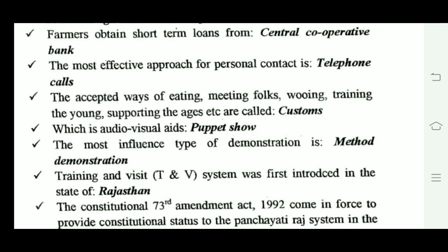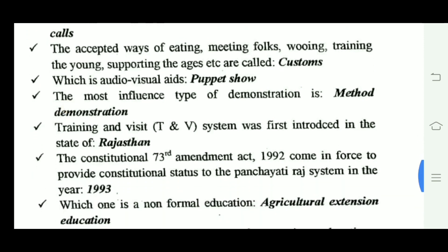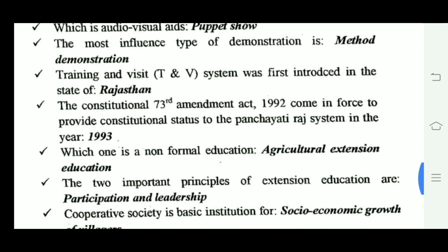Audio visual aids include usual ways and puppet shows. The most influential type of demonstration is method demonstration. The TNV system was first introduced in Rajasthan. The Constitutional 73rd Amendment Act 1992 came into force to provide constitutional status to the Panchayati Raj system in the year 1993.